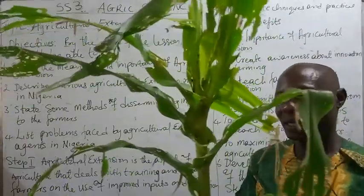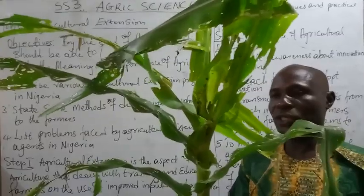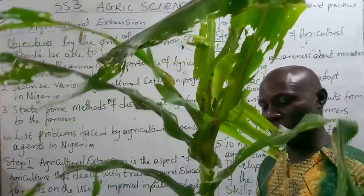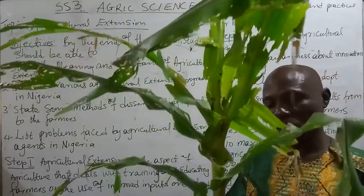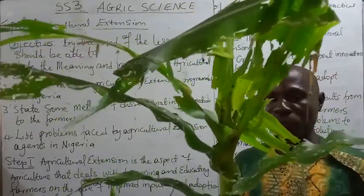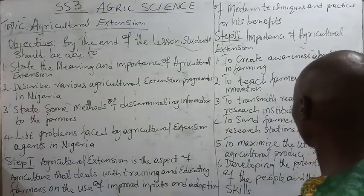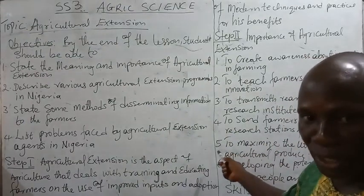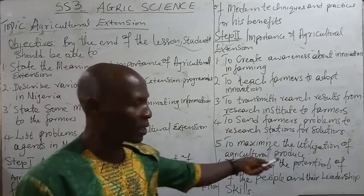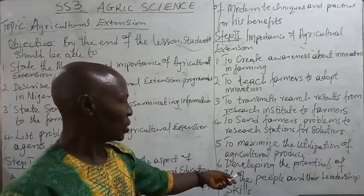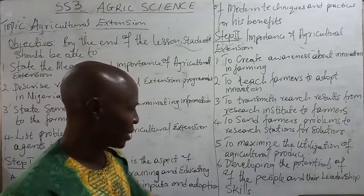For example, here in my hands, this plant is already infested by armyworms. What we are to do as an extension officer is to take this to the research institute for them to provide a solution to this armyworm or disease. Five, to maximize the utilization of agricultural produce. Six, developing the potentials of the people and their leadership skills.